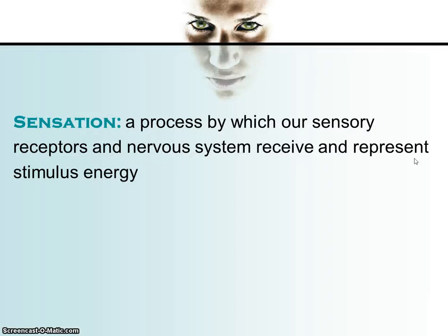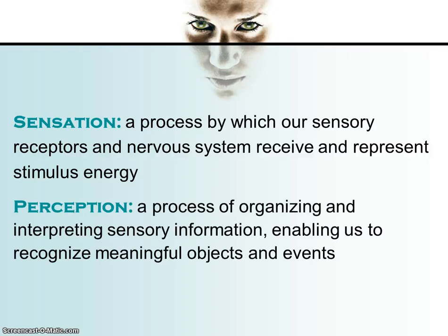Sensation is the process by which our sensory receptors and our nervous system receive and represent stimulus energy. Our five main senses are vision, hearing, smell, taste and touch. Perception, on the other hand, is the process of organising and interpreting that sensory information, which enables us to recognise meaningful objects and events.